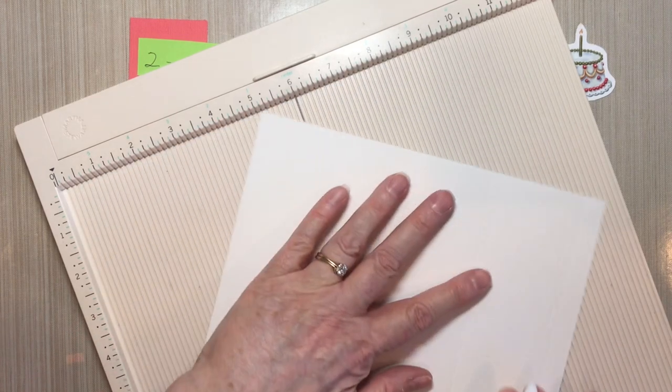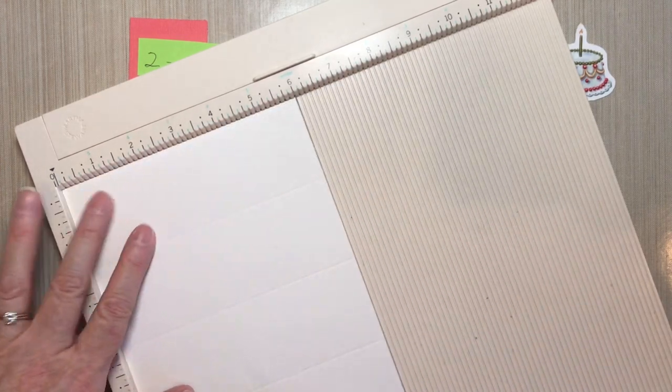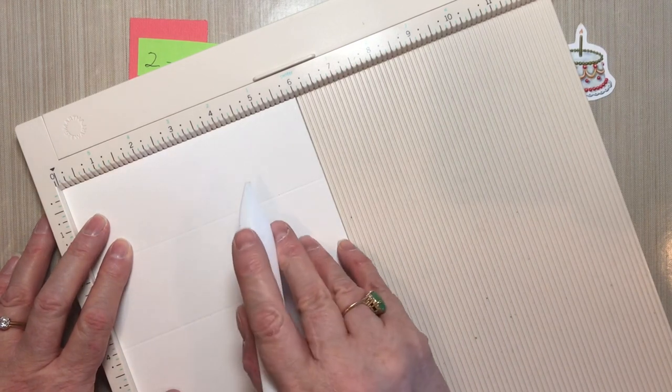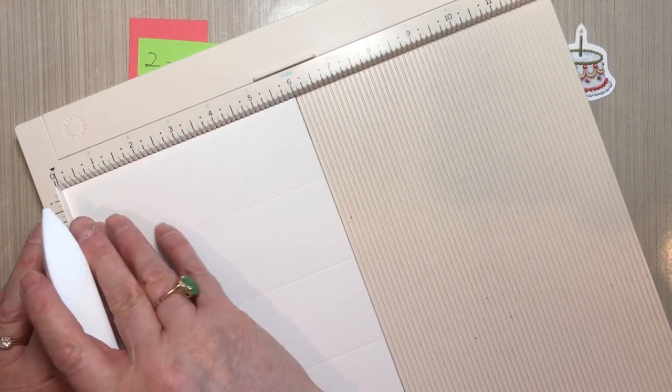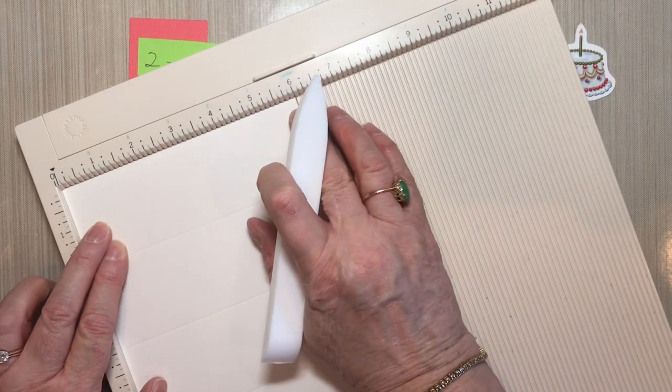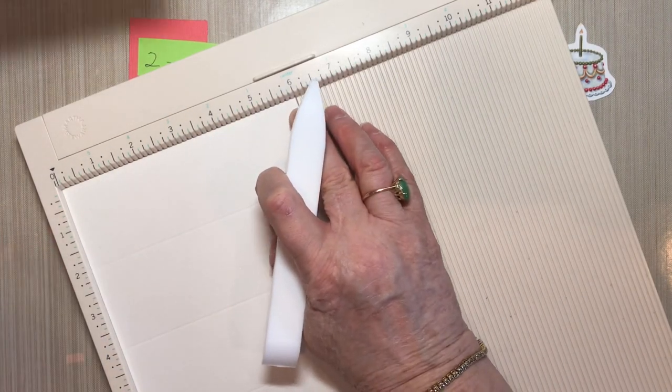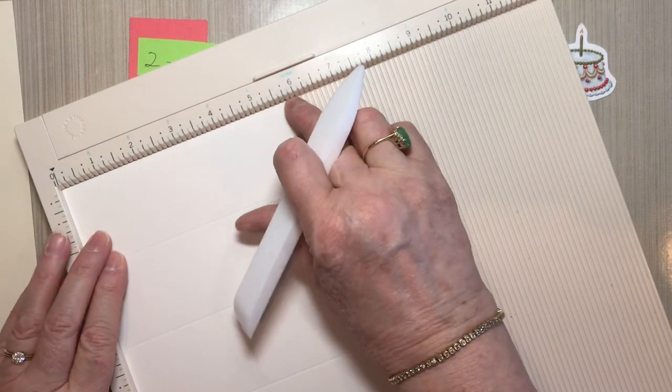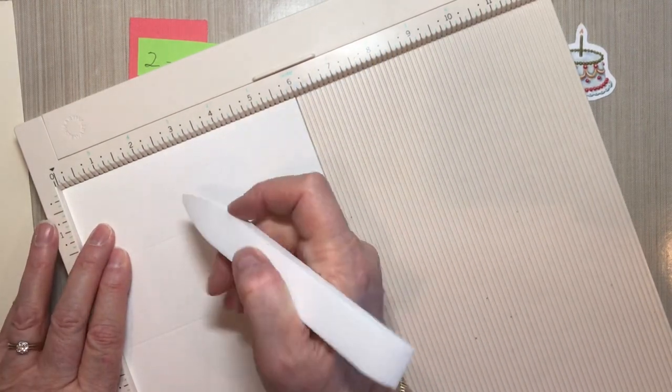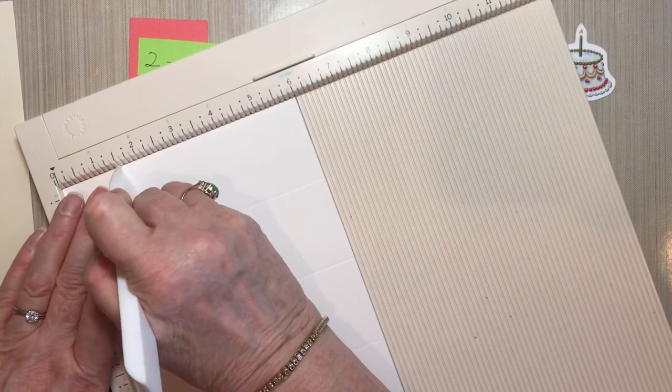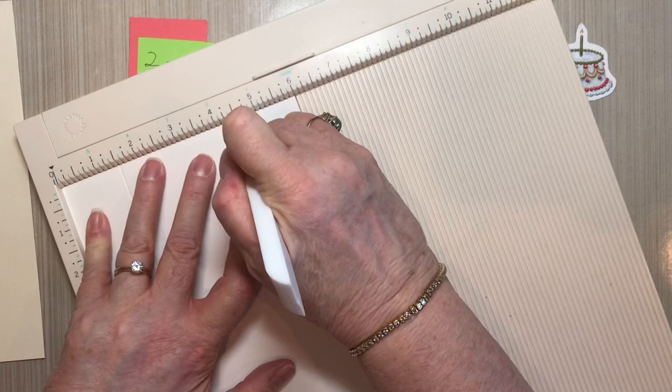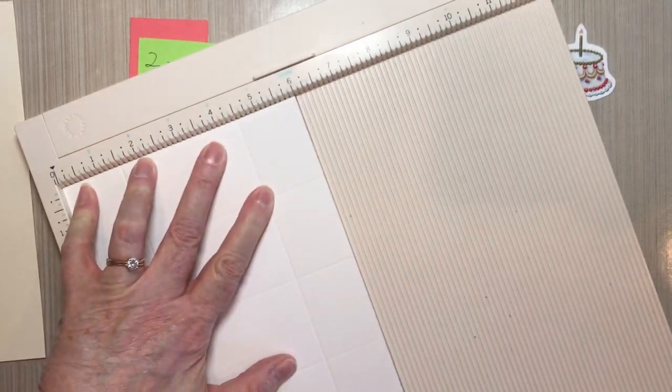Then rotate the paper 90 degrees. Now, this is different depending on whether you are using the 6 inch size of paper or the 5.5 inch size of paper. For the 6 inch size of paper, score at 1.5 and 4.5.